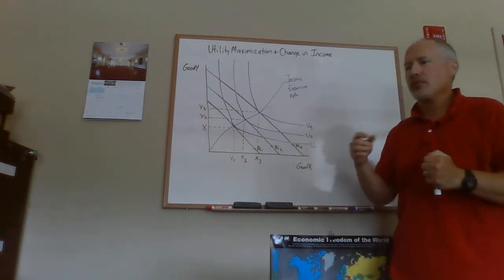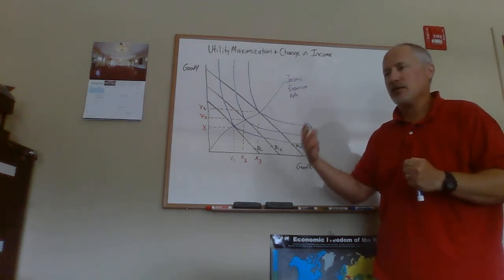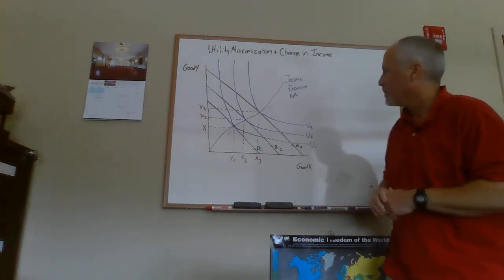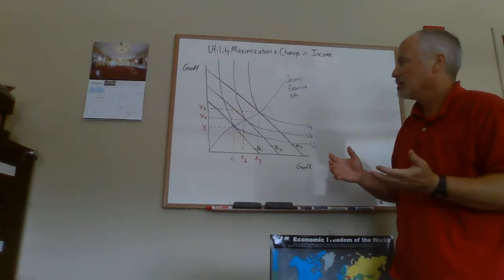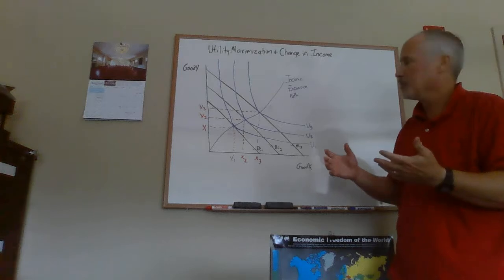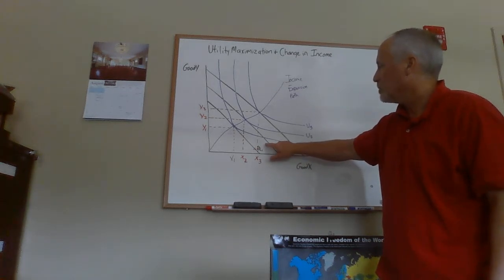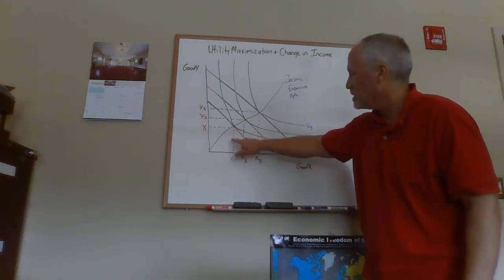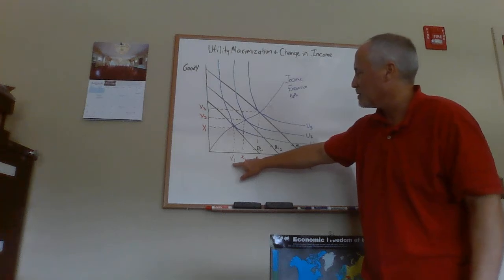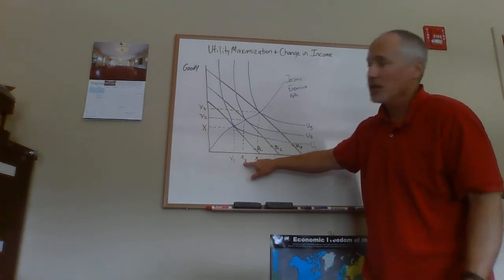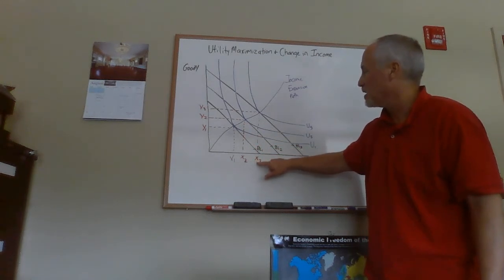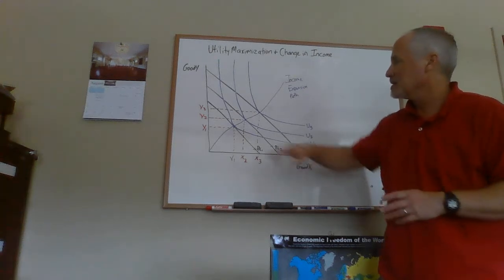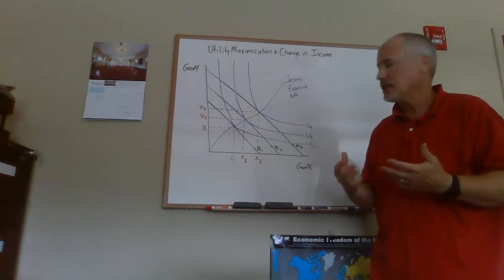In principles of microeconomics, we distinguish between normal goods and inferior goods. A normal good is one where, when your income goes up, you consume more of it. An inferior good is one where, when your income goes up, you buy less of it. The income expansion path reveals this. Going from BL1 to BL2 to BL3 represents income increases. As drawn here, x increases from x1 to x2 to x3 — so x is a normal good. Y also increases as income goes up, so both x and y are normal goods in this case.